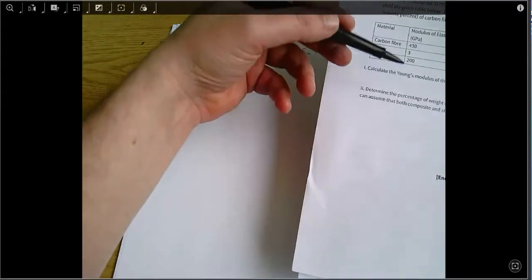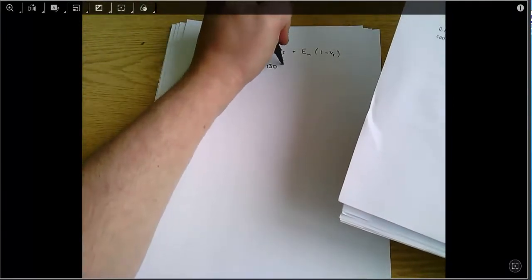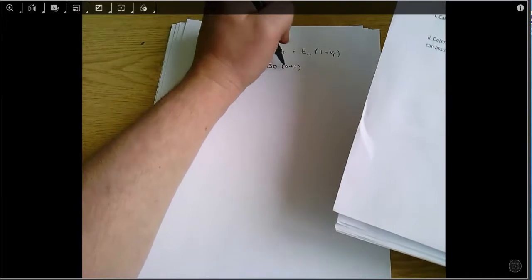EC, the Young's modulus of the composite, equals EF VF plus EM (1 minus VF), which equals, and then all of that information is here in the question. So we'll go through it in turn. EF, subscript F stands for fiber, so that's Young's modulus, modulus of elasticity. You have to know that Young's modulus and modulus of elasticity are the same thing. Of the fiber, which is 430, I'll write everything in gigapascals and then my final answer will be in gigapascals. It's 47 volume percent, that's 0.47 volume fraction, just under a half, basically.